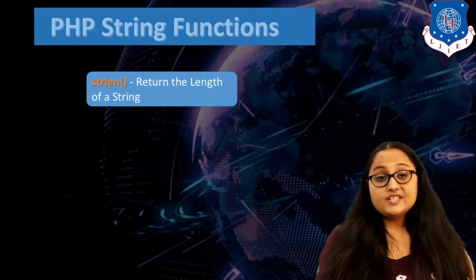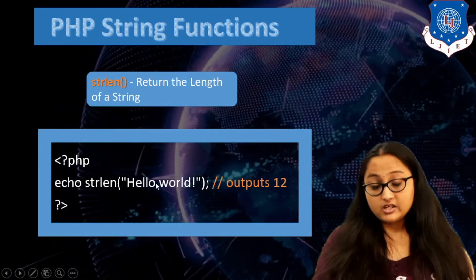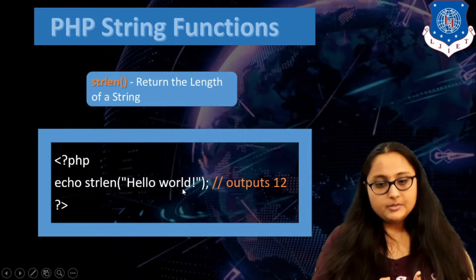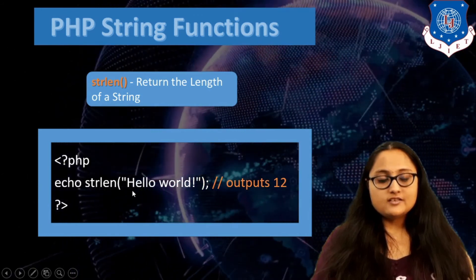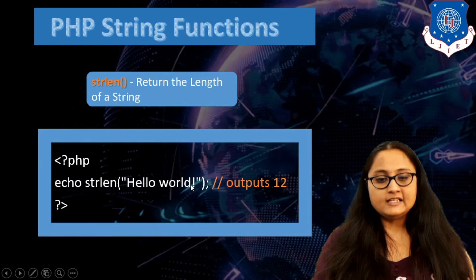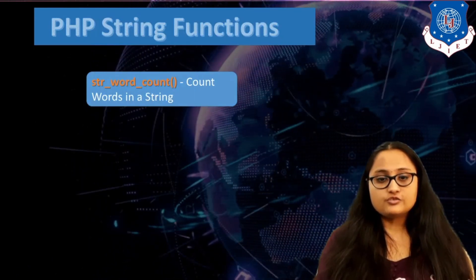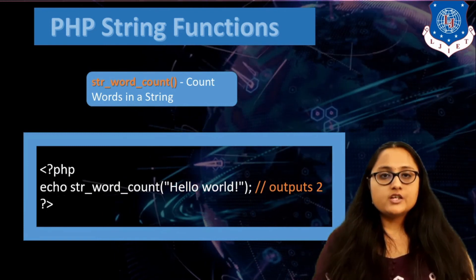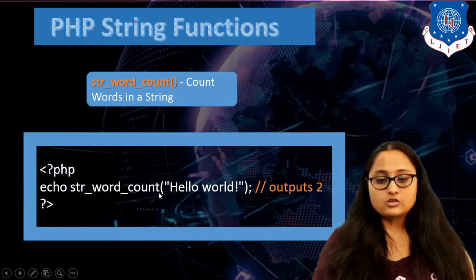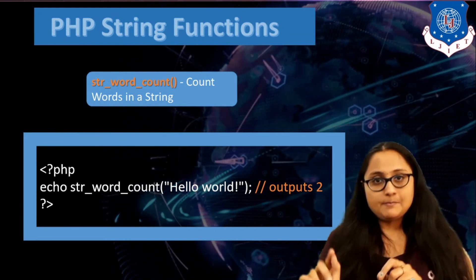Now let us look at some string functions in PHP. strlen() returns the length of a string — calling strlen('Hello World') counts all characters including the space, giving output 11. str_word_count() counts space-separated words — calling str_word_count('Hello World') returns 2, since there are two words.